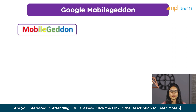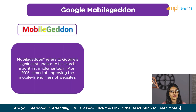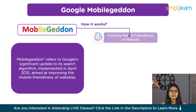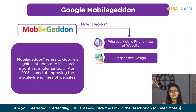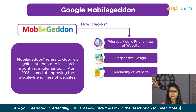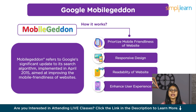Google Mobilegeddon refers to Google's significant update to its search algorithm implemented in April 2015, aimed at improving the mobile-friendliness of websites. With the advent of Mobilegeddon, Google introduced a pivotal change in its search algorithm, placing significant emphasis on the mobile-friendliness of websites. This update prioritized mobile-friendly sites in mobile search results, elevating their rankings while demoting those deemed non-mobile-friendly. Google evaluates sites for mobile usability, considering factors such as responsive design and readability to favor those optimized for mobile viewing. By implementing Mobilegeddon, Google aimed to enhance user experience by encouraging website owners to prioritize mobile optimization, boosting traffic and engagement on mobile platforms.